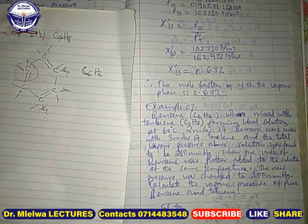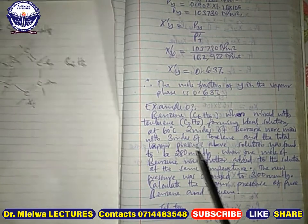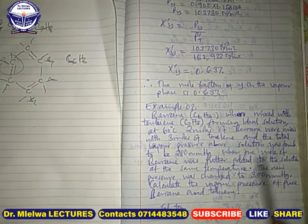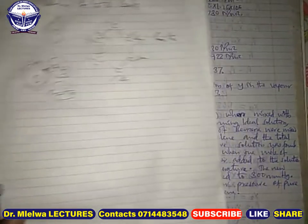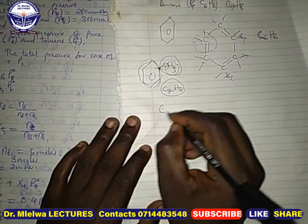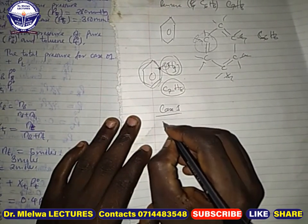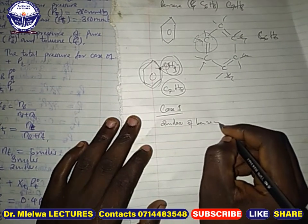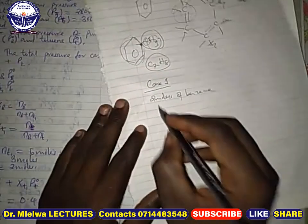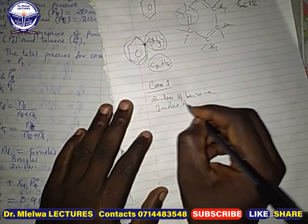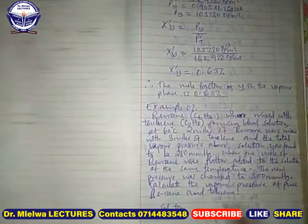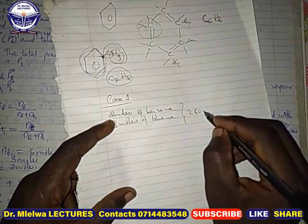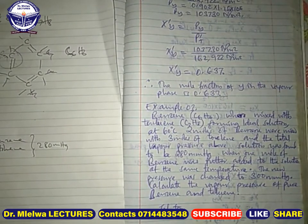When benzene and toluene are mixed, they form an ideal solution. Now, two moles of benzene were mixed with three moles of toluene, and the total vapor pressure above the solution was found to be 208 mmHg. This is case one.